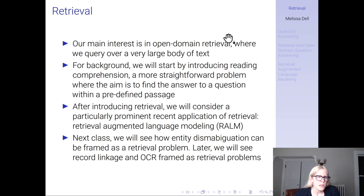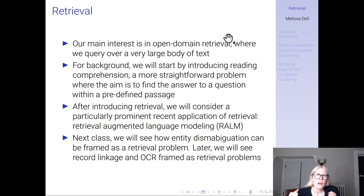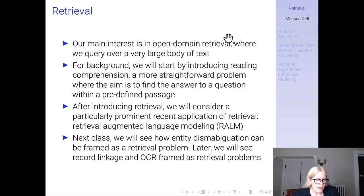For background, we're going to start by introducing reading comprehension, which is a pretty straightforward problem where the aim is to find the answer to a question within a predefined passage. Then we'll go to open domain retrieval, where we want to find the answer to a query over a potentially very large database, like the internet or Wikipedia.